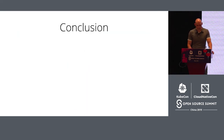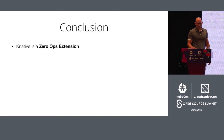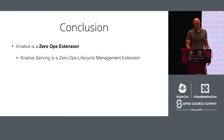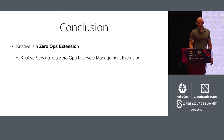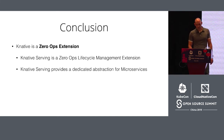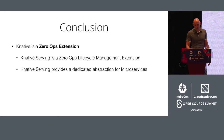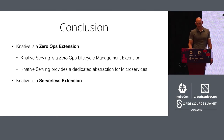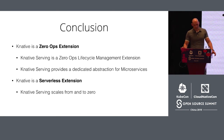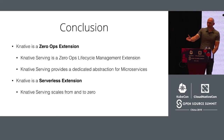In summary, Knative is a zero-operations extension for reactive microservice applications on Kubernetes. Knative Serving is a zero-operations extension for the lifecycle management of reactive microservice applications on Kubernetes. Knative Serving provides a dedicated abstraction for a microservice and automates its operation — that is, it automates deployment and rollout. Additionally, Knative Serving is a serverless extension, able to scale a microservice from and to zero instances in response to service requests. Thank you very much. I hand back to Andrew.